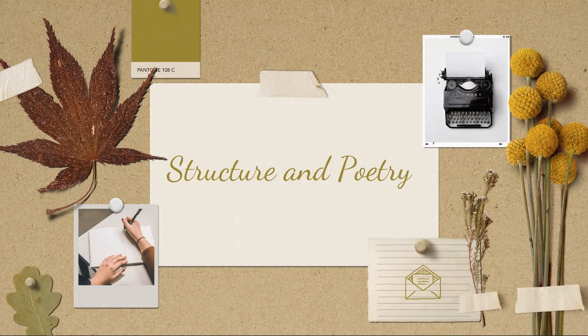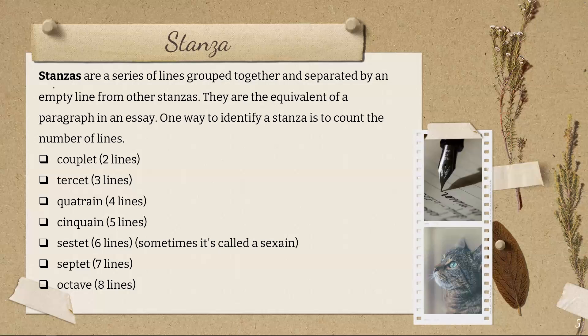Structure and poetry. An important method of analyzing a poem is to look at the stanza structure or style. Generally speaking, structure has to do with the overall organization of lines and the conventional patterns of sound. Stanzas are series of lines grouped together and separated by an empty line from other stanzas. They are the equivalent of a paragraph in an essay. One way to identify a stanza is to count the number of lines.